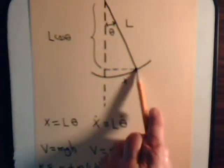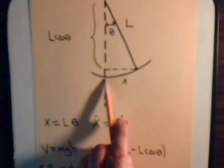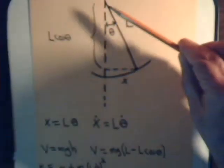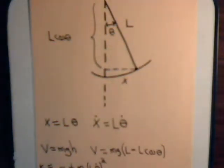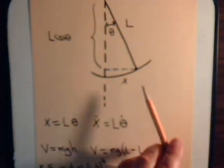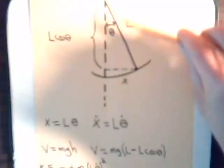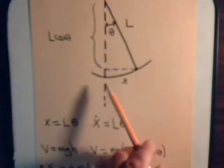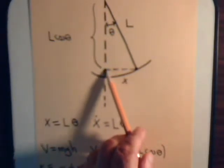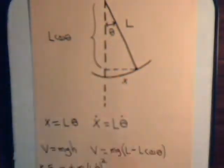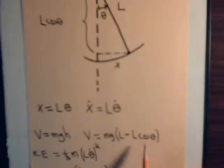When the pendulum is at the bottommost point of its arc, the full length from top to bottom is L. When it swings over to an angle theta, drawing a horizontal line shows that the vertical component is L times the cosine of theta. So the height H is L minus L times the cosine of theta.